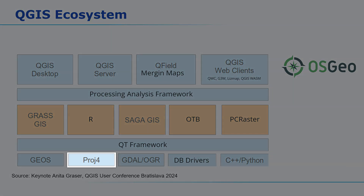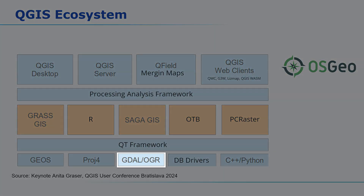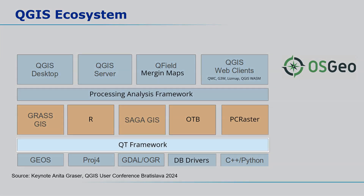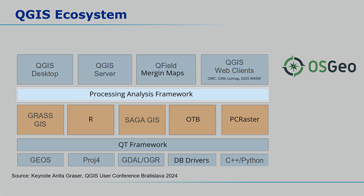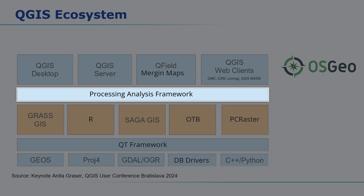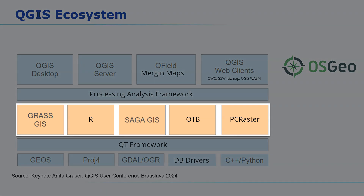The PROJ4 library handles cartographic projections and coordinate transformations. GDAL and OGR are used for reading and writing raster and vector data formats. Then there's also the Qt framework — a cross-platform application framework used for developing the graphical user interface of QGIS. It provides the tools and libraries needed to create the user-friendly and interactive interface that QGIS users interact with. Built on this is the QGIS processing analysis framework, which provides a set of tools and algorithms for spatial data analysis. A lot is core functionality, but it also allows developing plugins, custom scripts, and integrating third-party tools from so-called processing providers.